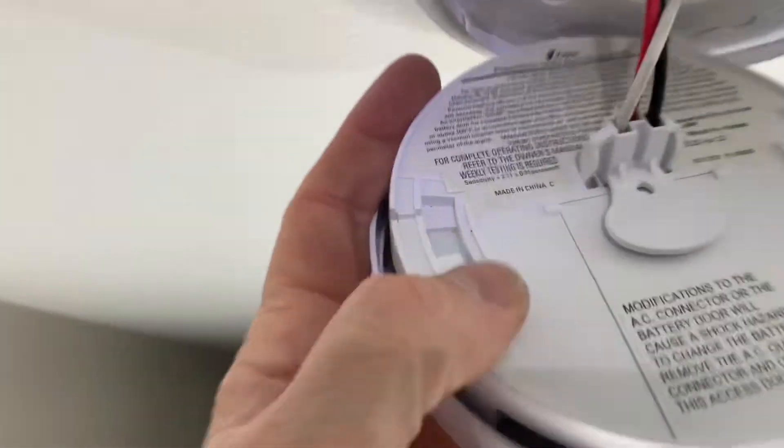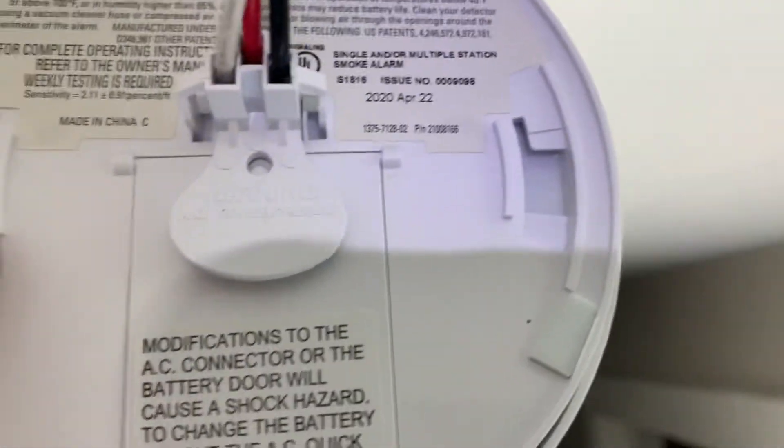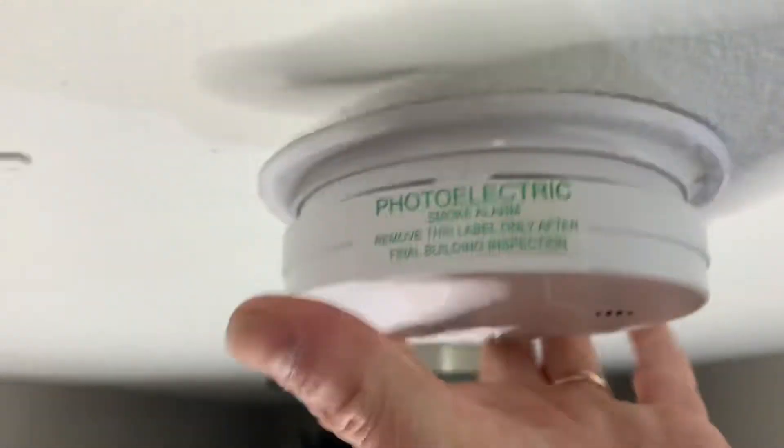Now it just screws up into these tabs. Those tabs right here and right there. Put the lock end of there, and then you just twist it. Push all the way up. Turn. There we go.